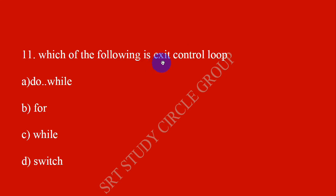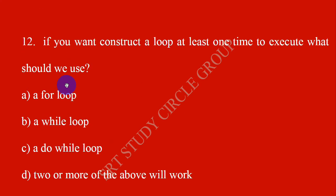Which of the following is an exit control loop? The exit control loop is do-while. In do-while, the program runs first and the exit condition is checked after. If you want to construct a loop that executes at least one time, you should use do-while loop.